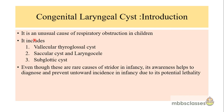Congenital laryngeal cysts are unusual causes of respiratory obstruction in children. These include the vallicular thyroglossal cyst, saccular cyst, laryngocele, and subglottic cyst. Today we'll be discussing the vallicular thyroglossal cyst, saccular cyst, and the laryngocele. These congenital laryngeal cysts are rare causes of stridor in infancy, but they can sometimes cause potentially severe airway obstructions, so we must be aware about these conditions — how to diagnose and how to prevent untoward incidents in infancy.